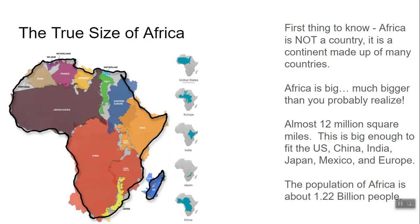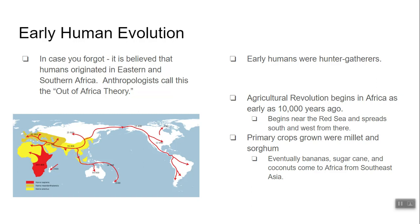A quick reminder from one of our very first lectures on early human evolution: there's a theory called the Out of Africa theory. From anthropologists, it's believed scientifically that our earliest ancestors came from the savannas of eastern and southern Africa and spread out from there. I've got an image here to show you how that spread happened. These early humans were hunter-gatherers, and the agricultural revolution started approximately 10,000 years ago and moved very slowly.